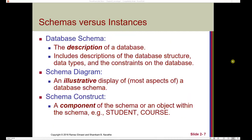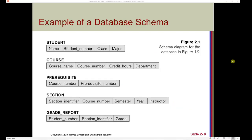Let's talk about the difference between a schema and an instance. A database schema provides a description of a database, including descriptions of the database structure, data types, and constraints on the database. A schema diagram is an illustrative display of most aspects of the database schema. A schema construct is a component of the schema, or an object within the schema — for example, a student or course within the university mini-world that we discussed in Chapter 1.